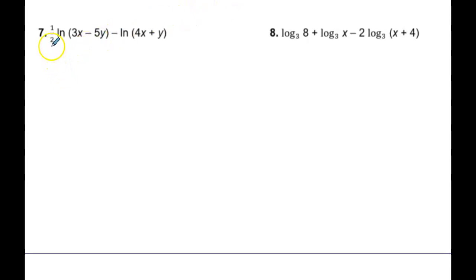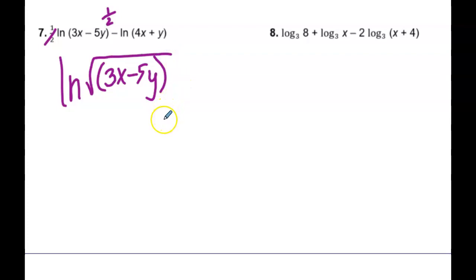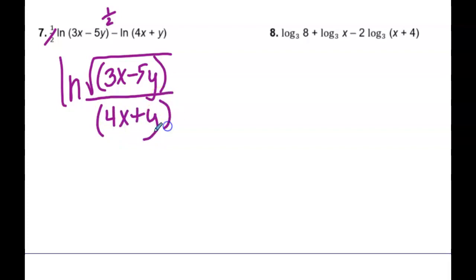What is a 1 and a half power going to mean? This is going to go up here as a 1 and a half, which means it's going to be written as a square root. This is going to be the natural log of (3x minus 5y) to the 1 and a half power — please write it as a square root, don't leave it as a 1 and a half power. And then the minus means I'm going to put this second mess in the denominator: 4x plus y. So it's the natural log of the square root of (3x minus 5y) over (4x plus y).